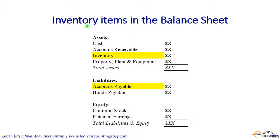Next up we want to look at where inventory shows up in the balance sheet. Inventory appears here in the assets section as a current asset, meaning we expect inventory to be sold within one year, or the operating cycle if that's longer.